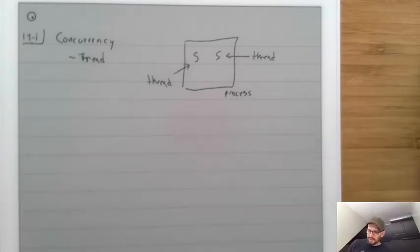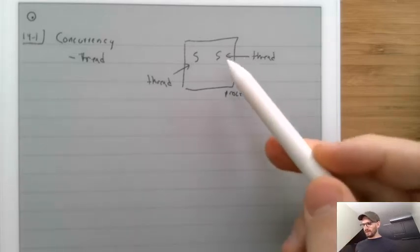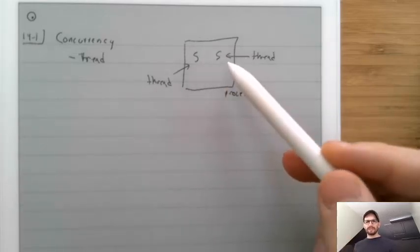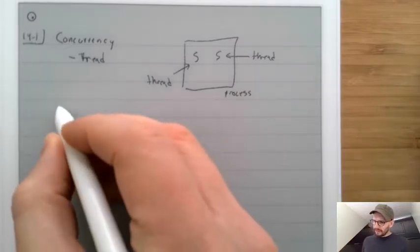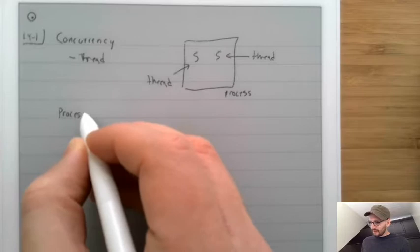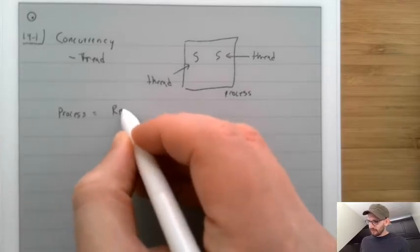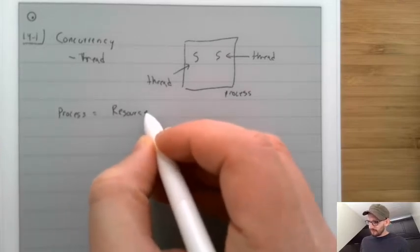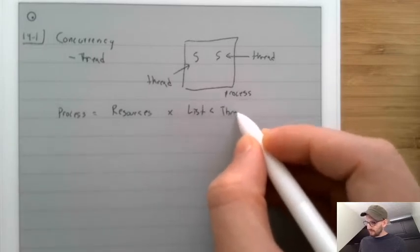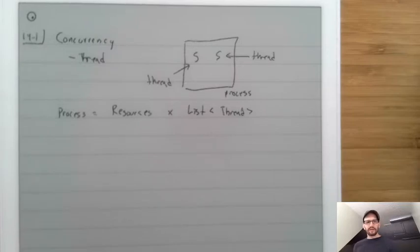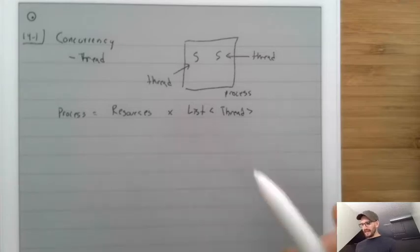So what does it mean for there to be a thread? It's one thing that's running inside of your process, and then there's another one. A process is a combination of resources plus a list of threads. The process stores resources like memory, files, access permissions, things like that, and then it has some threads.